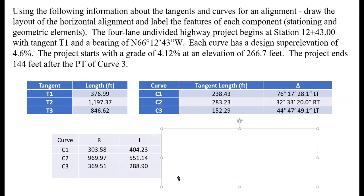Next, we can find the length of curve for each of these curves by multiplying our delta by 100 and then dividing by our radius. Actually we need to get this to the degree of curvature. So the length of this first curve will have 100 times 76°17'28.1", and then we're going to divide by the degree of curvature, which we're going to use the radius to determine. That's 18,000 over pi times our radius value. That's how we'll find each of those lengths.